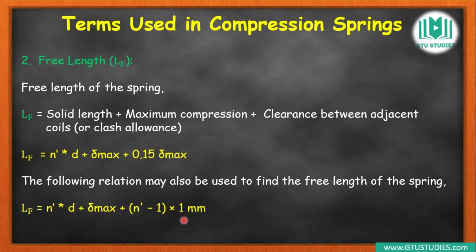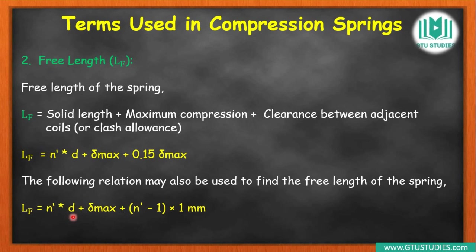If we keep 1 mm clearance between each coil, then total clearance depends on the number of gaps. If there are 10 coils (10 wires), the total number of gaps is (n' − 1). Each gap has 1 mm clearance, so total clearance = (n' − 1) × 1 mm. Adding this to delta max and n' × d gives us the complete free length equation.